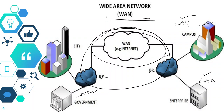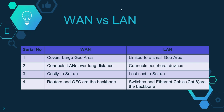What is the comparison between WAN and LAN? First, the WAN covers a large geographical area while the LAN is limited to a small geographical area. Second, the WAN connects different LANs over long distances, as we saw in the previous diagram. The LAN connects peripheral devices such as PCs within a small geographical area.